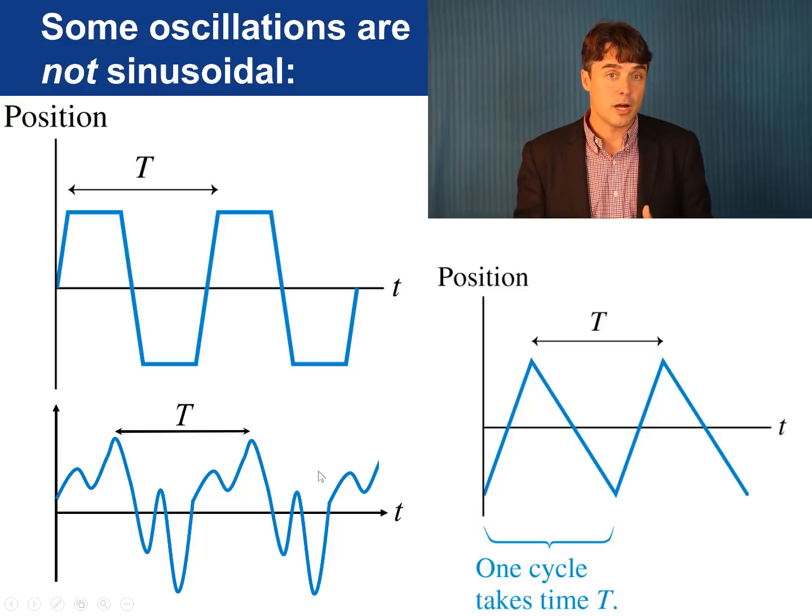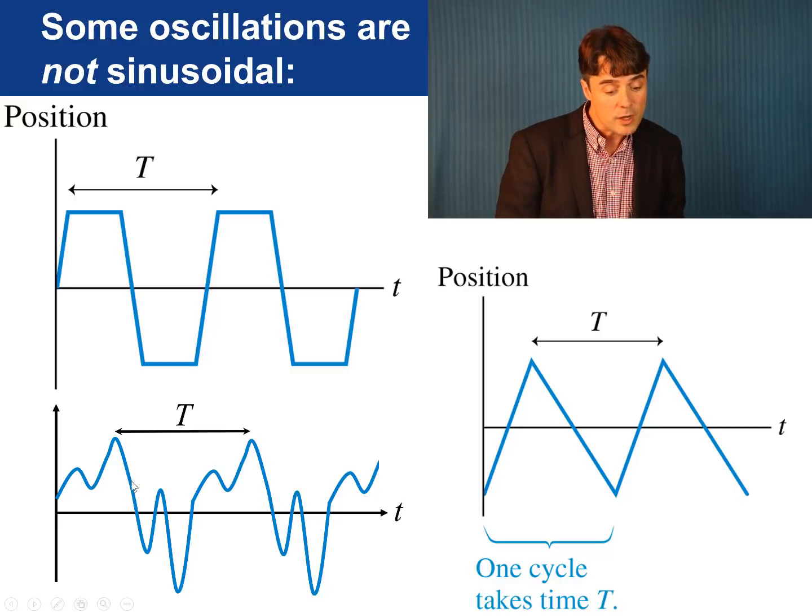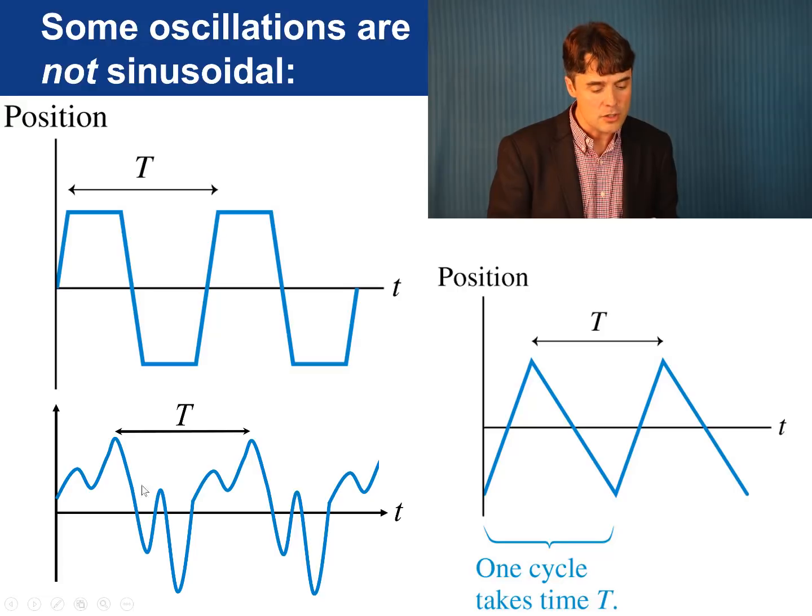Here are some plots of position versus time for assorted periodic oscillations. This one kind of looks square-like, and this one is a triangle pattern, and this one looks random at first until you notice that this wiggly motion repeats.